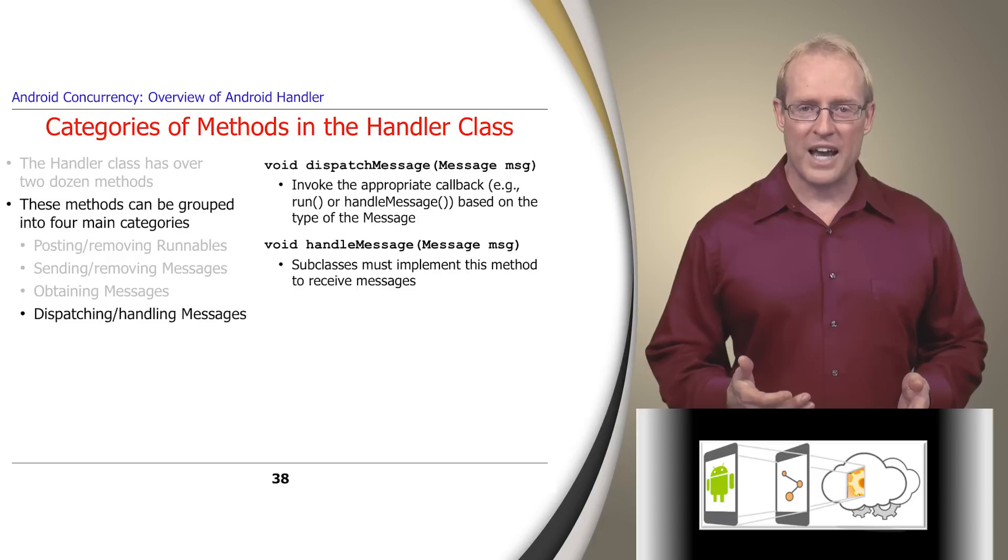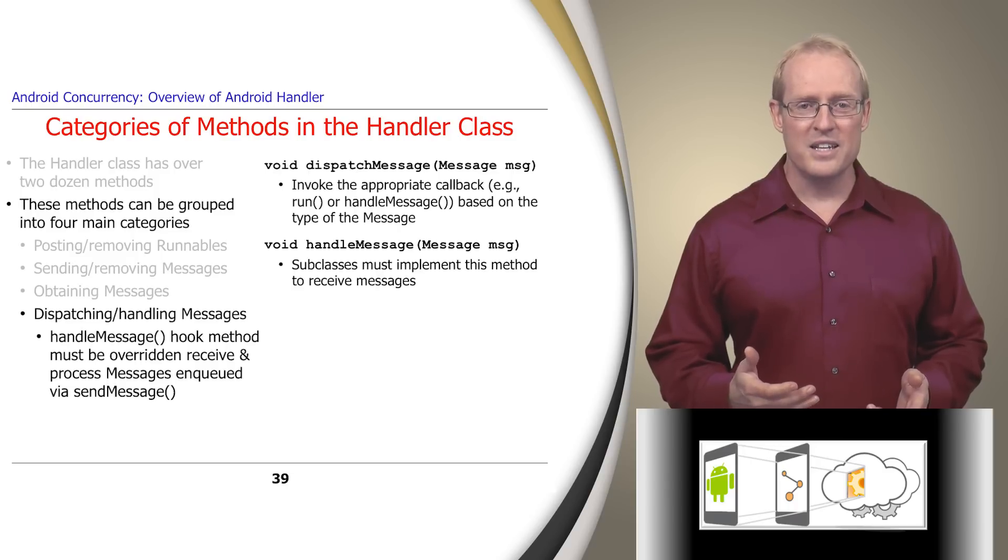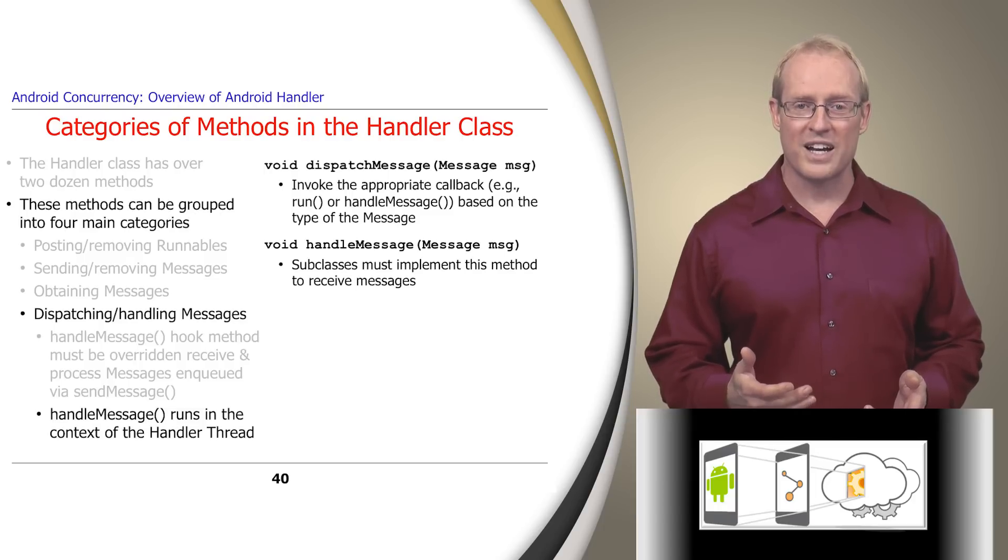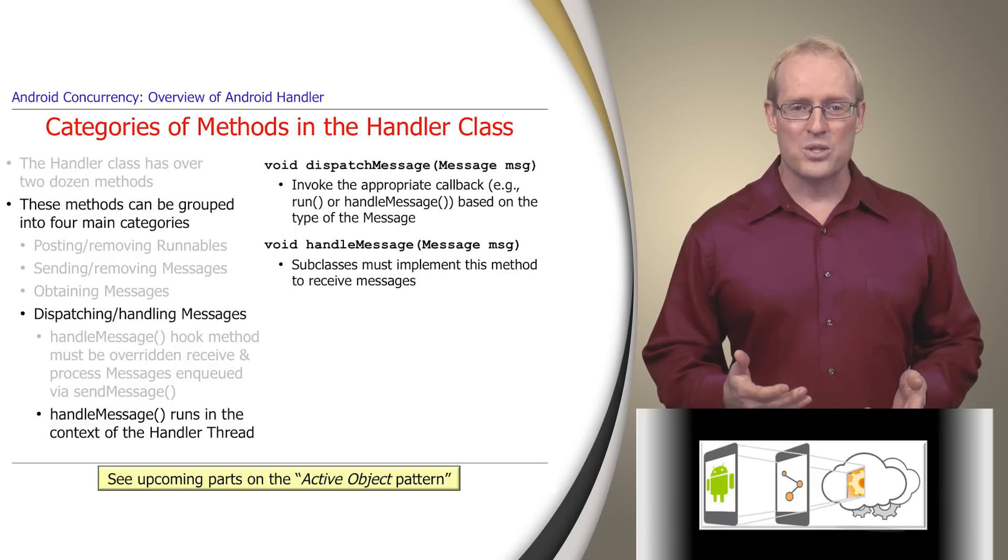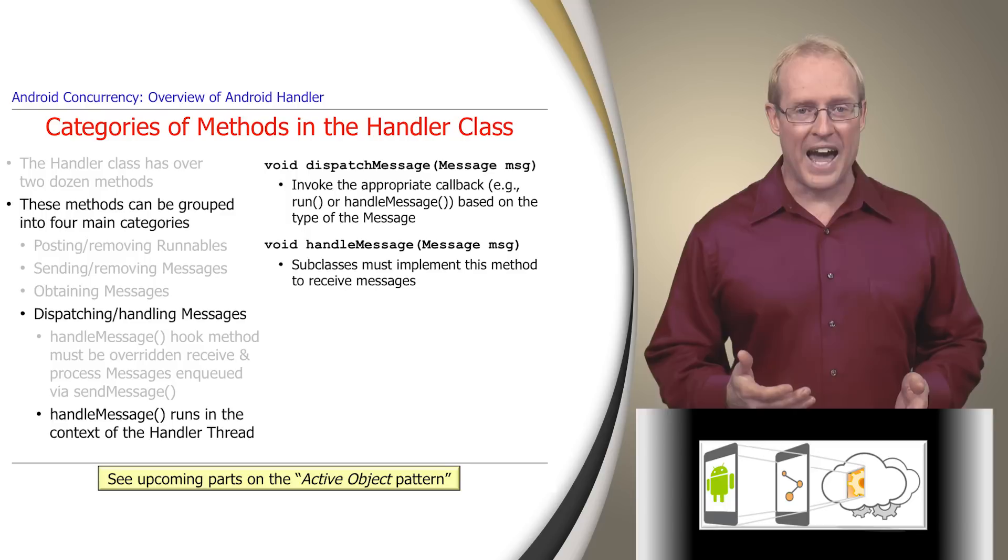The fourth and final category of handler methods is used to dispatch and handle messages via the handleMessage hook method. This method must be overridden to receive and process messages enqueued via sendMessage. The handleMessage hook method runs in the context of the thread-specific looper associated with the handler instance, again, in accordance with the message passing variant of the active object pattern.